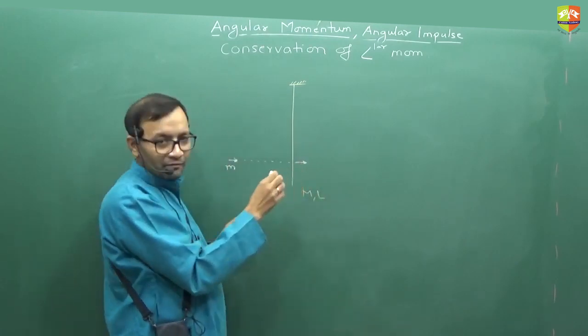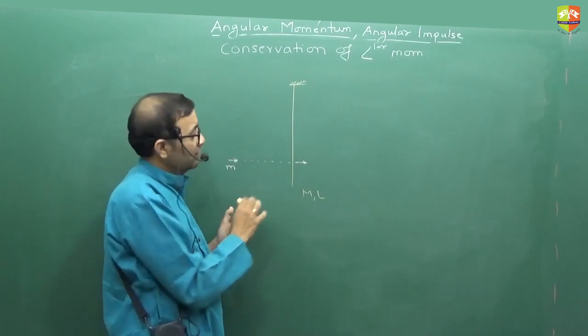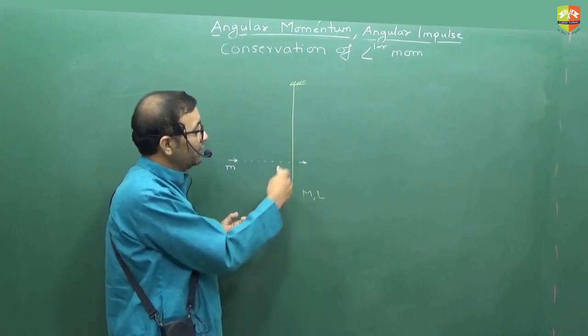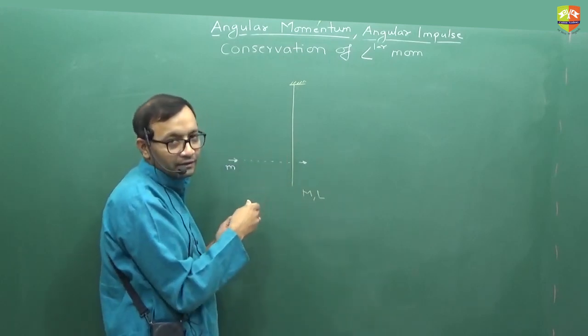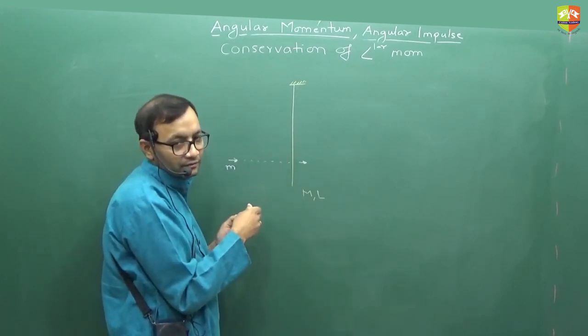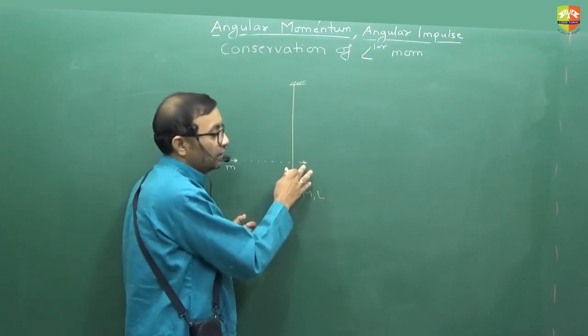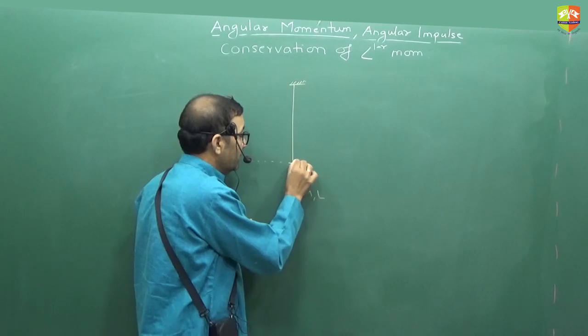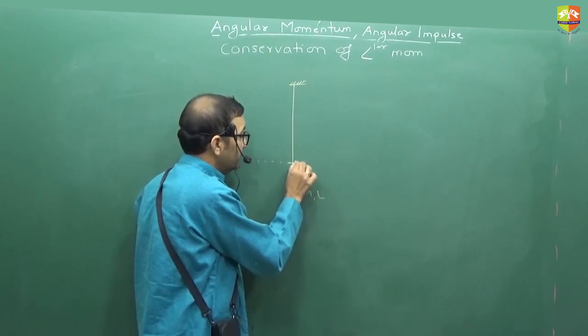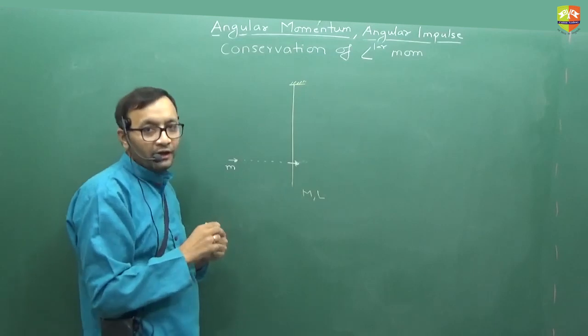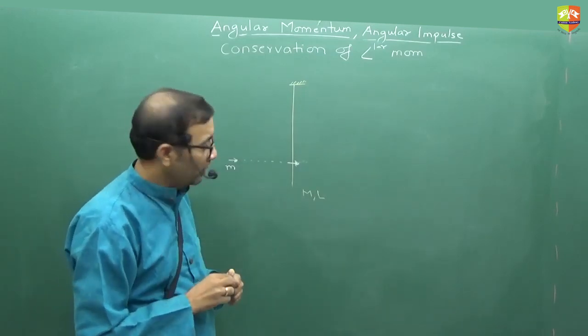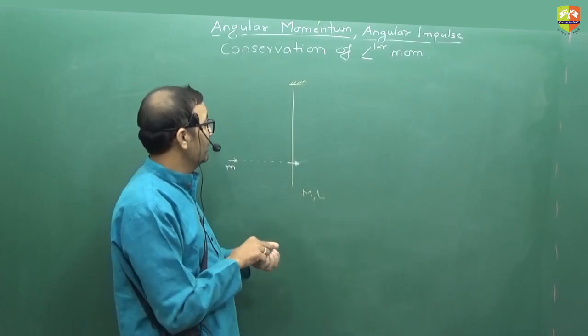Should I simplify this or is it okay? Simplification will be bullet doesn't come out, it gets embedded inside. Bullet becomes a part of the rod, it doesn't come out, it got embedded inside the rod of mass M and length L.